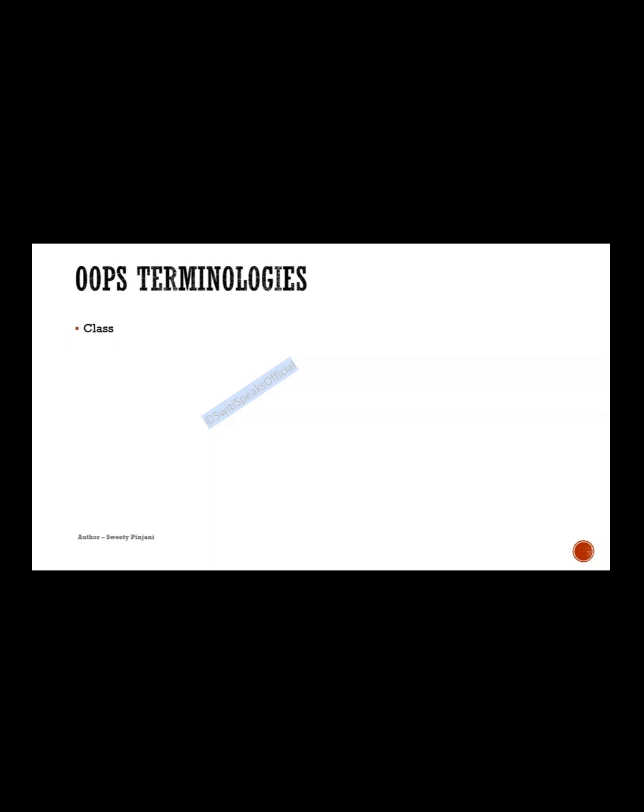The first terminology is class. As we had seen in the previous lecture, class is something which has data types and the functions which operate on that data type clubbed together. In simple words, that is class — data types and functions which work on those data types, clubbed together.